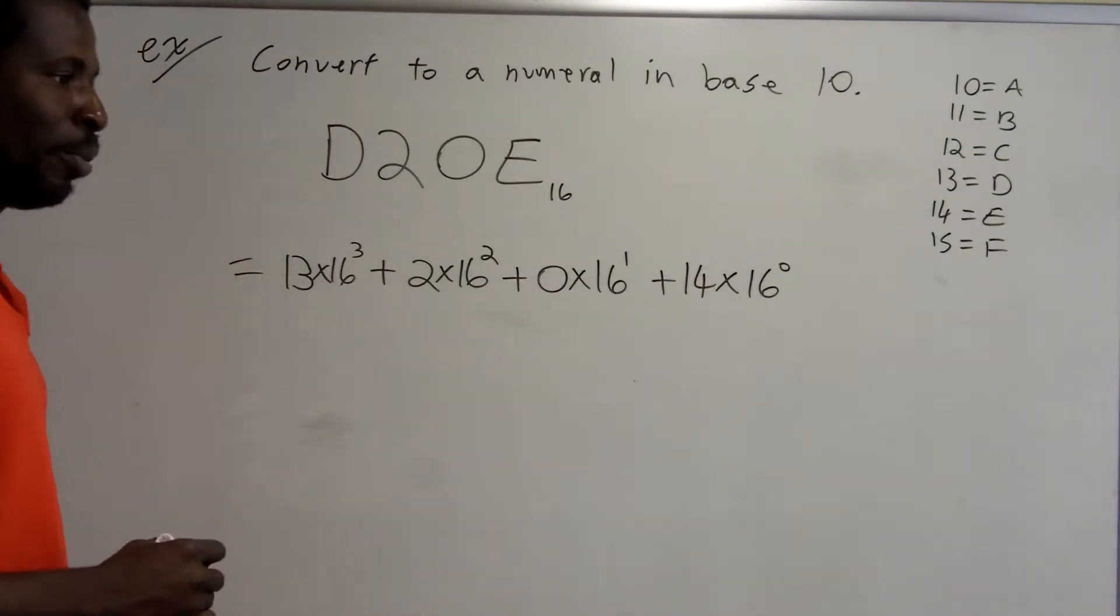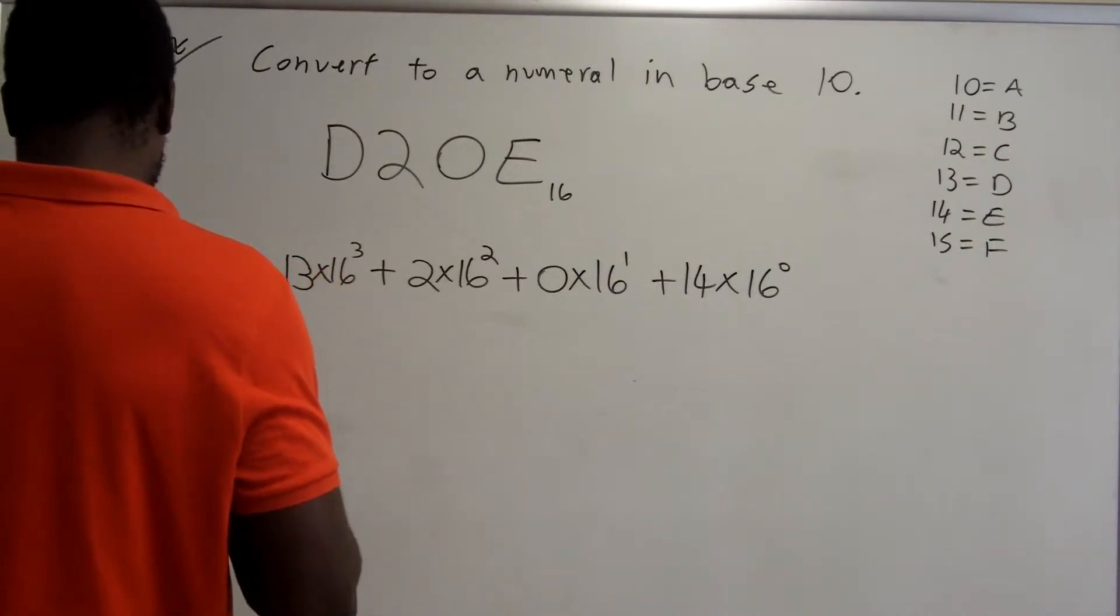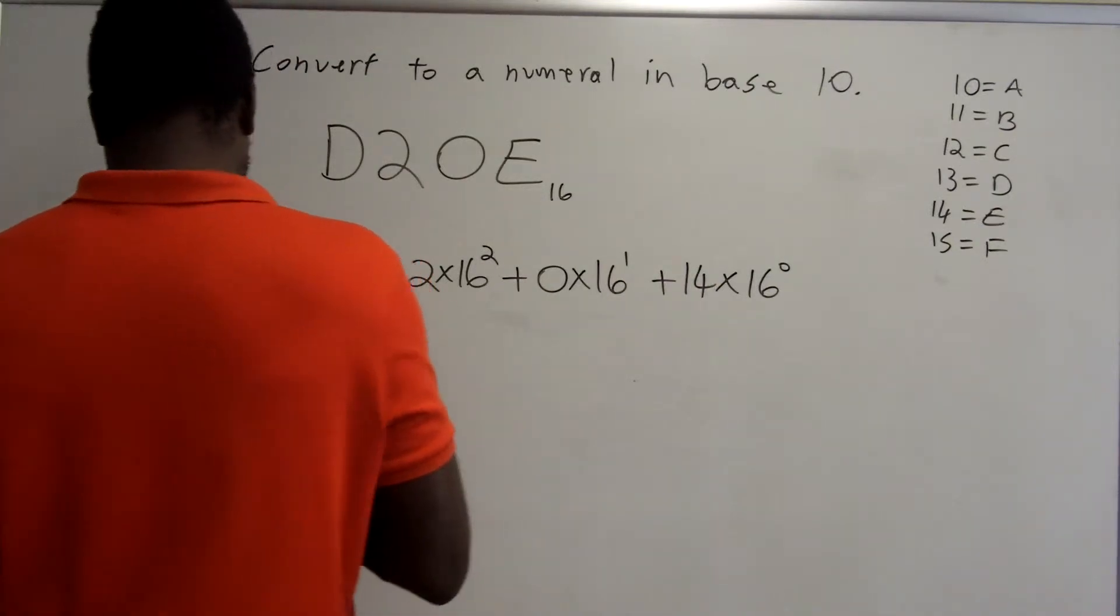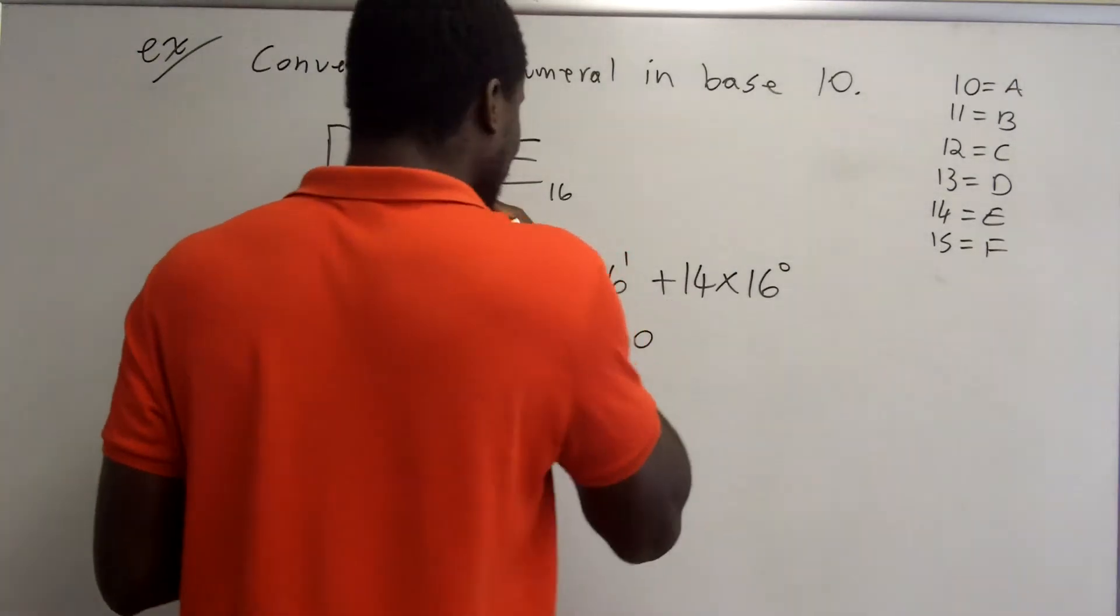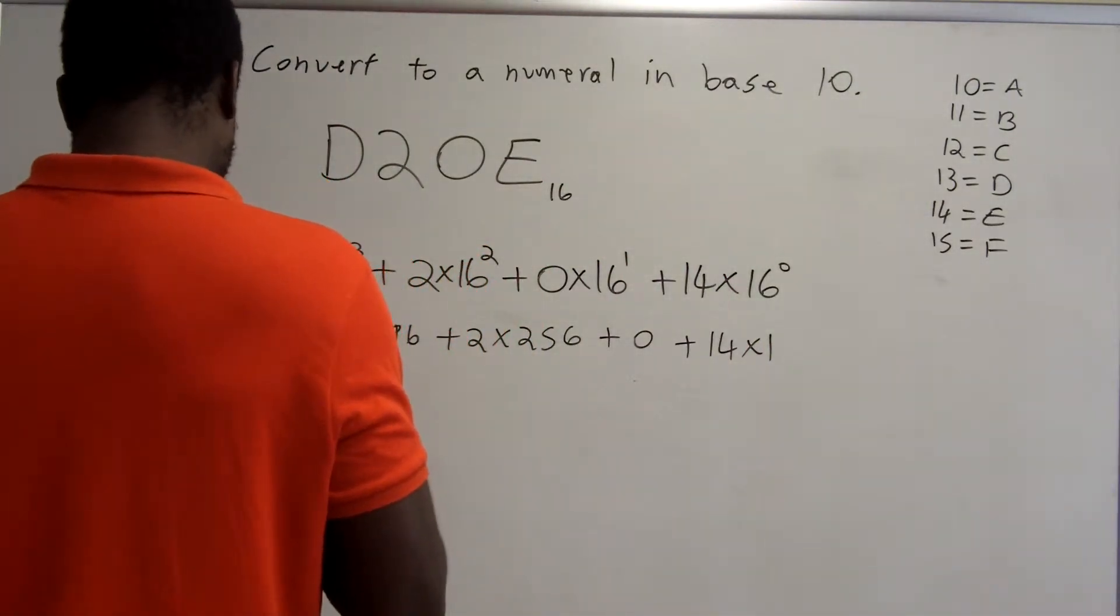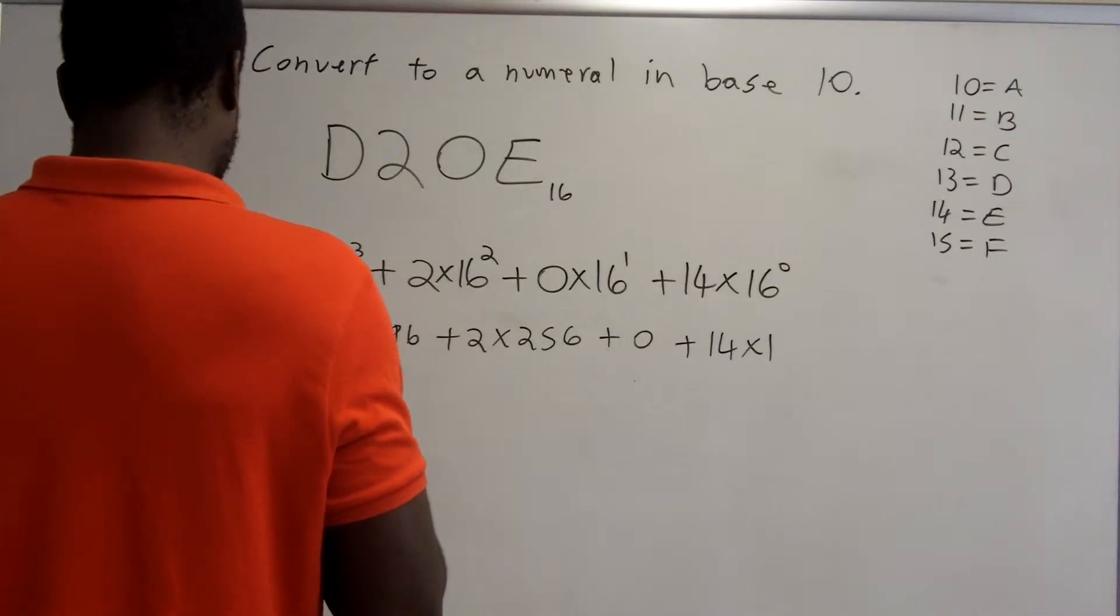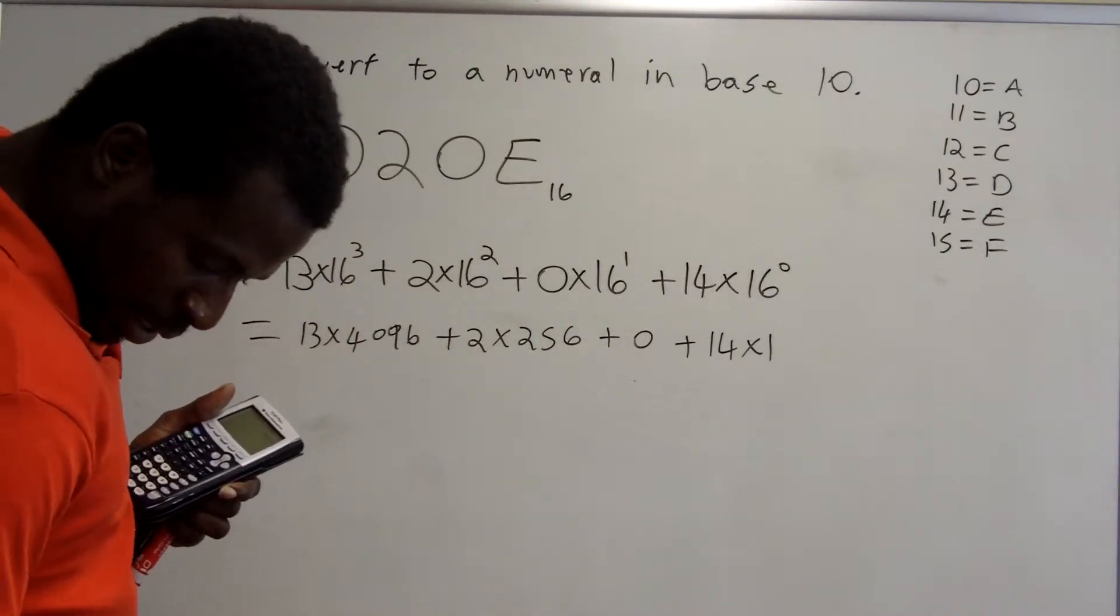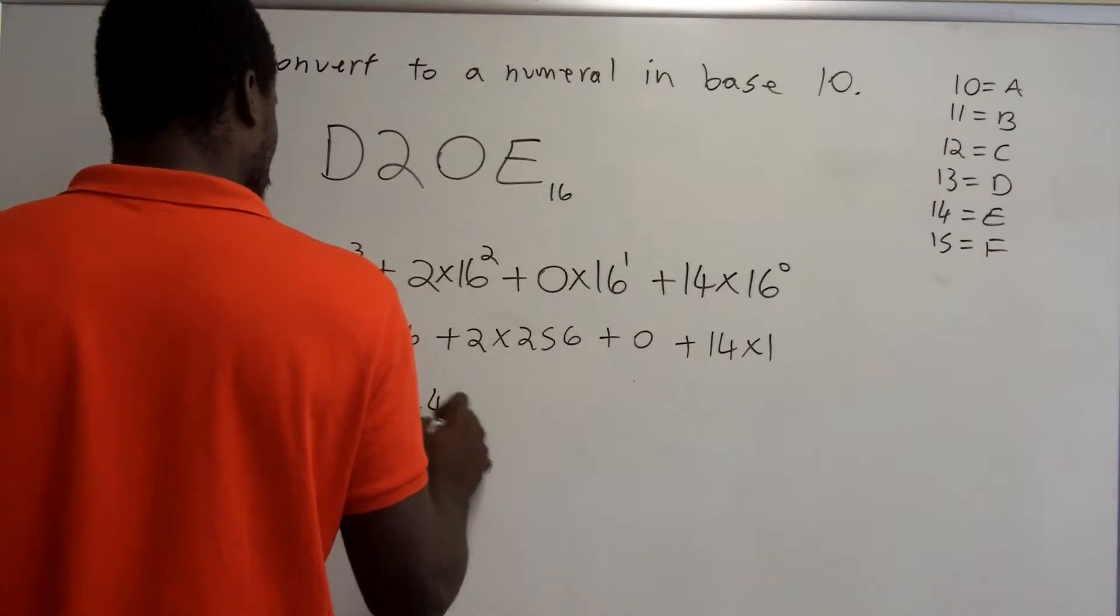This sum will actually be the number that we need converted to base 10. So let's see here. We have 16 cubed is 4,096 times 13. 16 squared is 256. This is 0. And this is plus 14 times 1. So we have 13 times 4,096 plus 2 times 256 plus 0 plus 14 times 1.